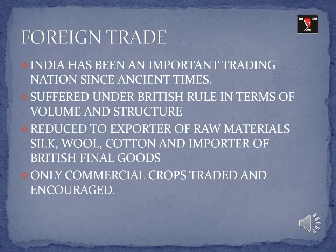Moving ahead to foreign trade — trade that takes place between countries. India had been an important trading nation since ancient times and was a major exporter, maintaining a favorable trade balance. But because of the repressive policies of the British, India was reduced to being an exporter of silk, wool, and cotton and forced to become an importer of British finished goods. Our trade balance became unfavorable, causing a great loss to domestic income.